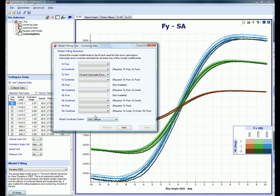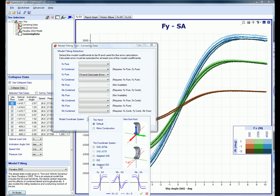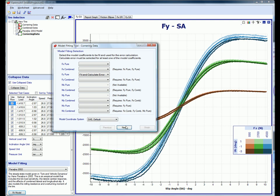We can also choose any coordinate system we wish for the tire model that we're fitting. This doesn't need to be the same as the coordinate system that the data was imported in. Optimum T will do all the conversions required.